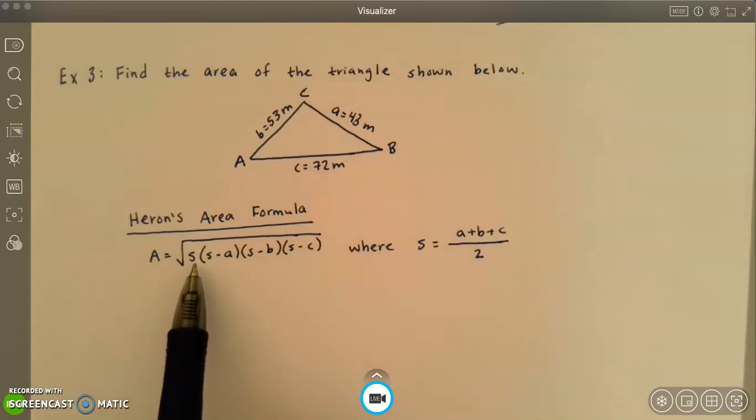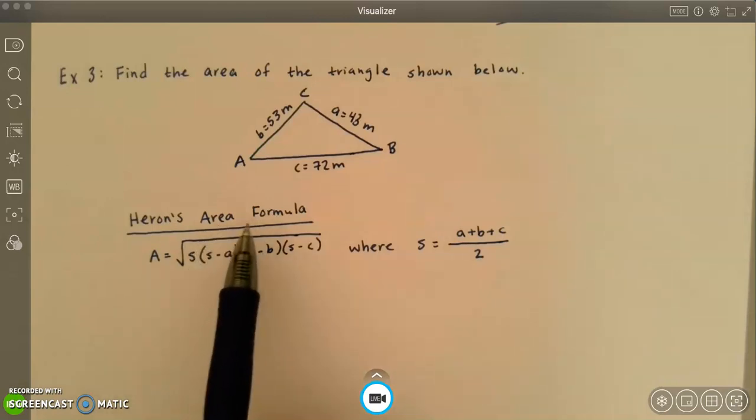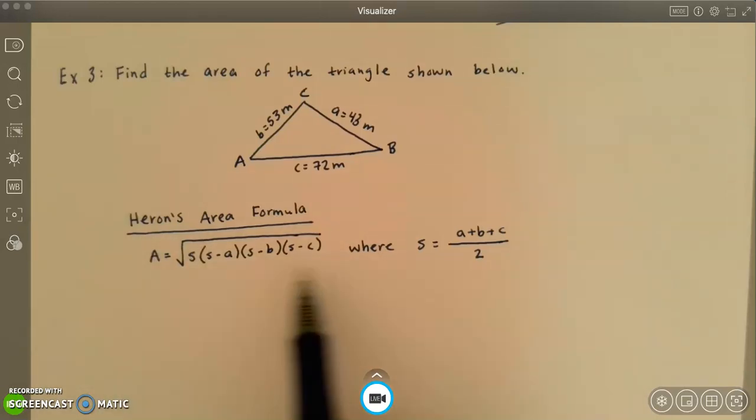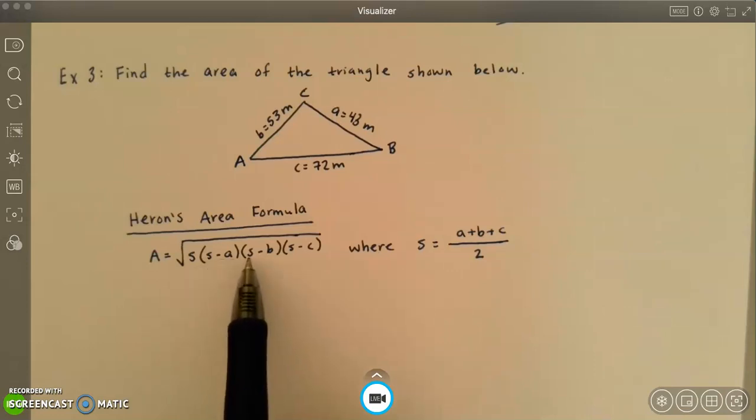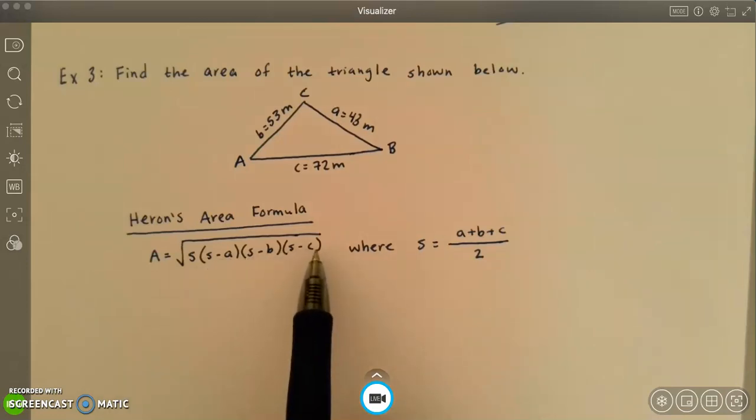There is a formula to find the area of a triangle that only requires knowing the sides. It's called Heron's area formula. And this is the formula: we have the square root of s times s minus a, times s minus b, times s minus c.